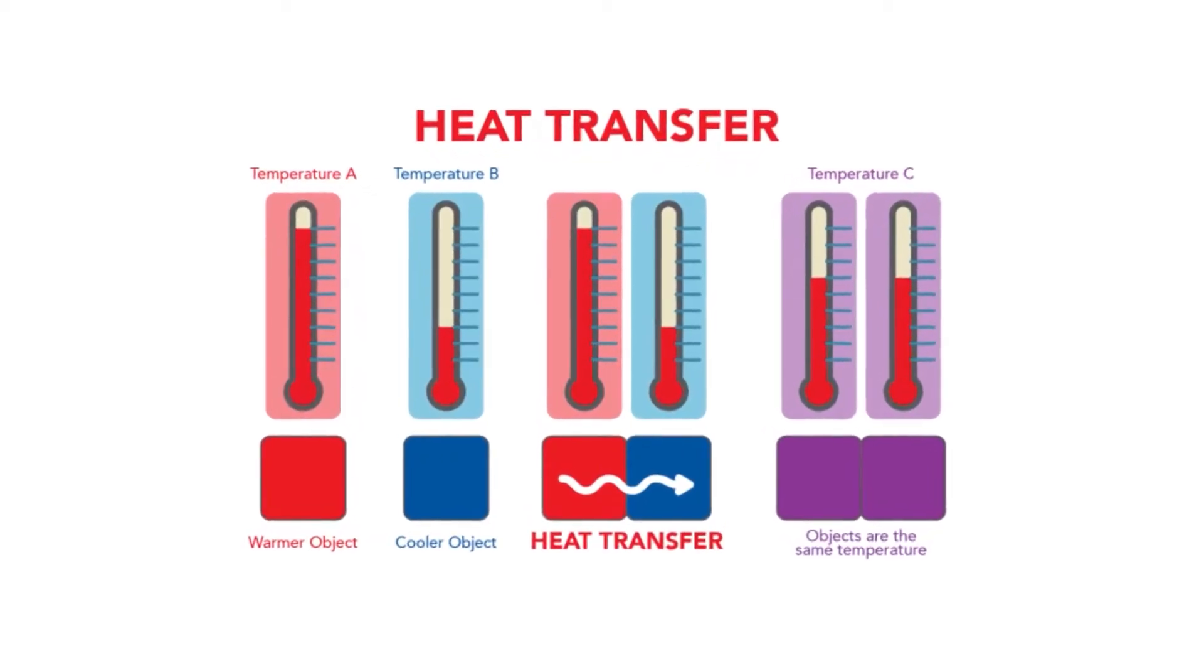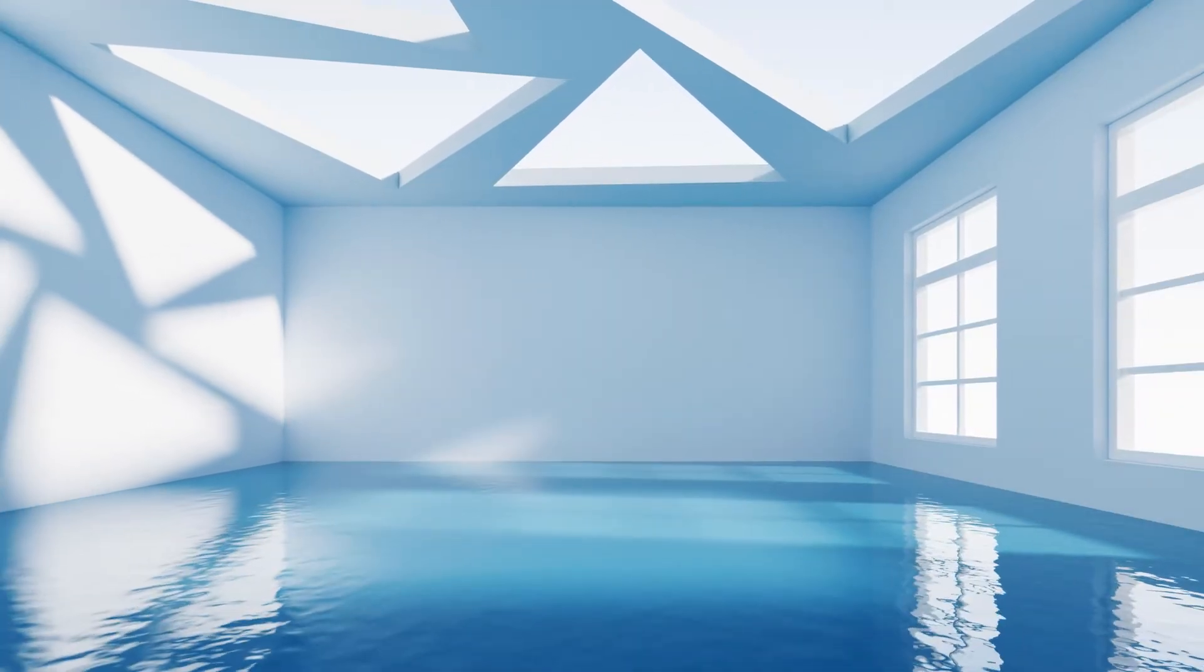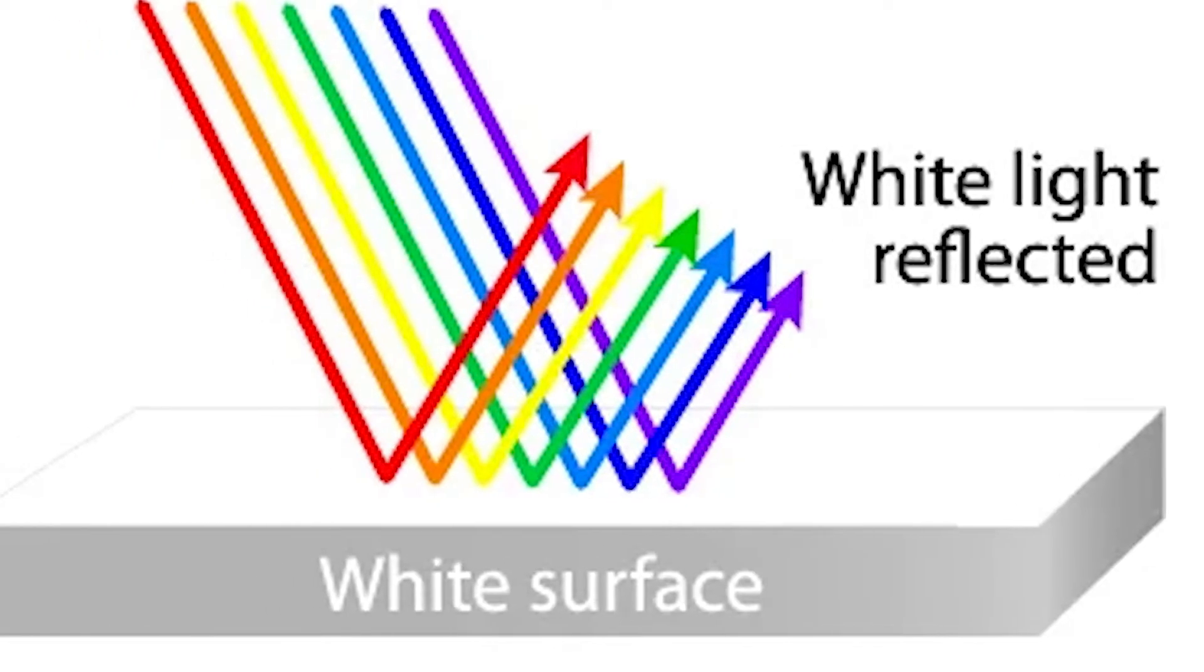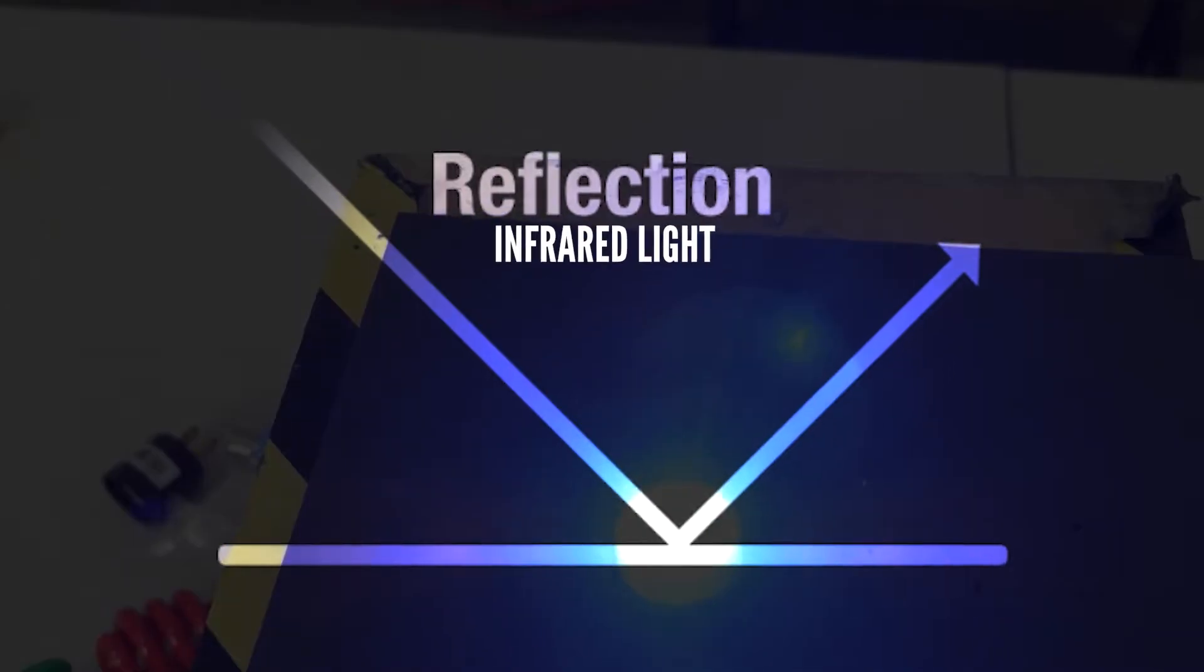Now that we've grasped the fundamentals of heat transfer, we're primed to explore how white ceilings contribute to cooling. White ceilings boast the unique ability to reflect all wavelengths of light, including visible and infrared light.